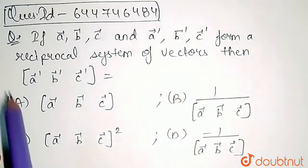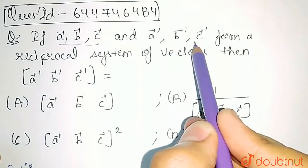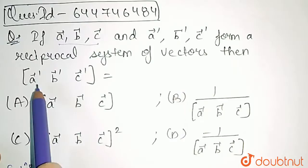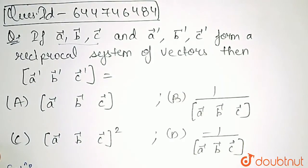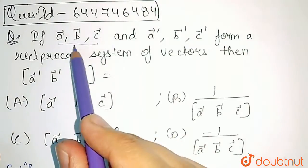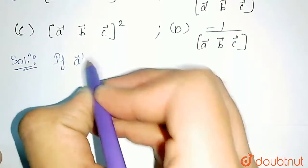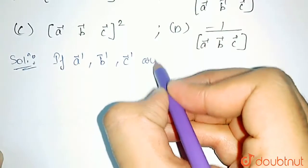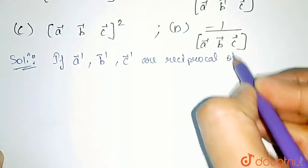In this question, it is given that if ABC and A'B'C' form a reciprocal system of vectors, then we need to identify the scalar triple product of A', B', C' vectors. So first of all, if ABC and A'B'C' are reciprocal, if A' vector,